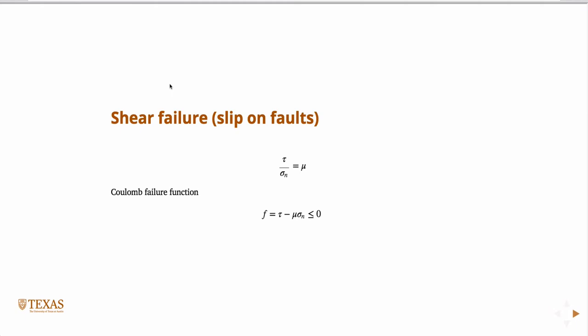The ratio of the shear to normal stress. A lot of times we write it like this: if the shear stress is some coefficient times the normal stress, if that's less than zero, then the fault will not slip. If it's equal to zero, it means the fault is slipping.